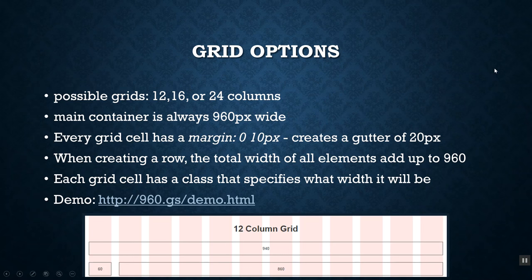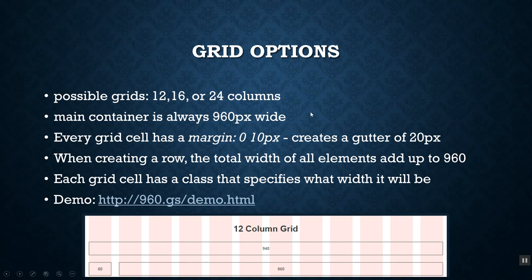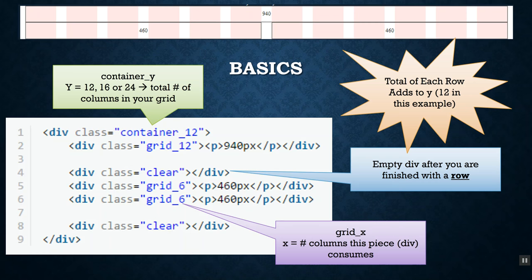Inside the downloaded folder there are several different grid options: 12 columns, 16 columns, or 24 columns. The main container for the page is always 960 pixels wide and is set up with certain margins so you get a gutter — about 20 pixels of spacing between your defined sections. When creating a full row, the total width adds up to 960 pixels, and each grid cell has a class. There's a demo link showing previews of the 12-, 16-, and 24-column grids.